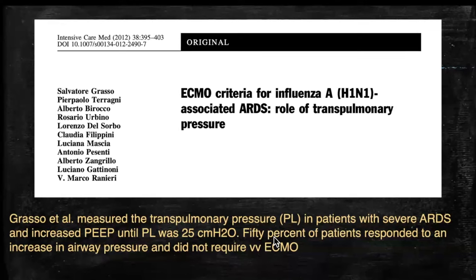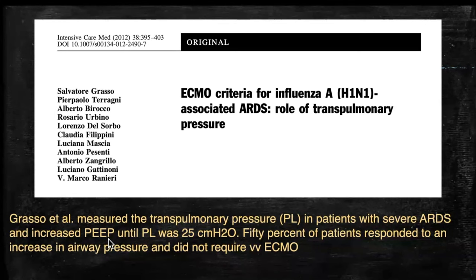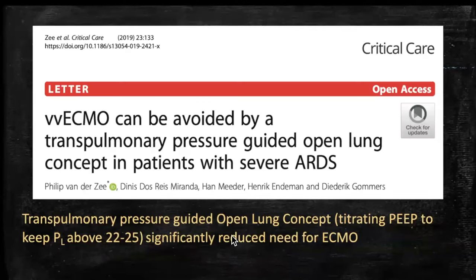Studies have shown benefits of measuring esophageal pressure. In one study, patients meeting ECMO criteria had trans-pulmonary pressure measured and PEEP increased until trans-pulmonary pressure reached 25 centimeters of water; 50% of patients responded and did not require VV-ECMO. A recent 2019 study also supported trans-pulmonary pressure use, showing that trans-pulmonary pressure-guided open lung concept significantly reduced the need for ECMO.